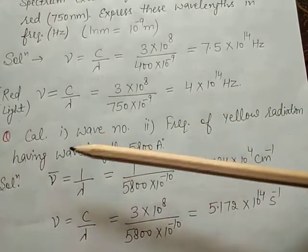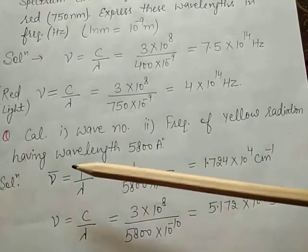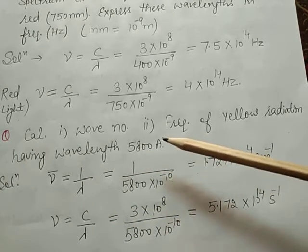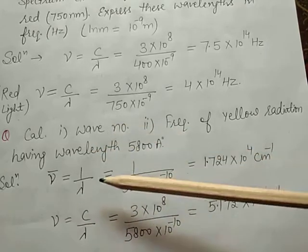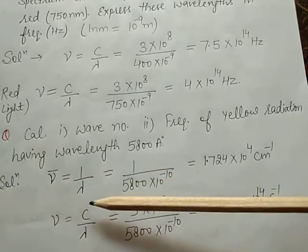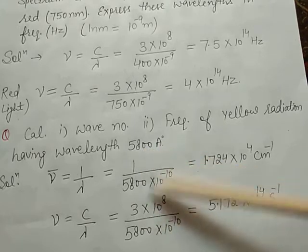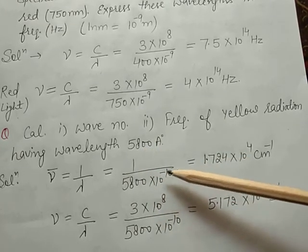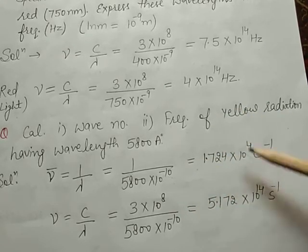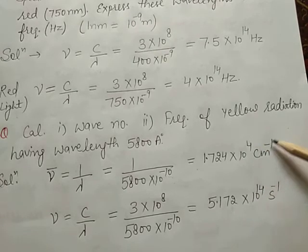Next question: calculate the wave number and frequency of yellow radiations having wavelength 5800 angstroms. First, calculate the wave number. Wave number is denoted by mu bar. Mu bar is equal to 1 by lambda, that is 1 divided by 5800 multiplied by 10 to the power minus 10 meters. The unit of wave number is centimeter inverse.